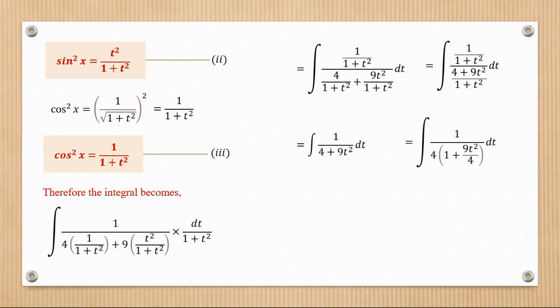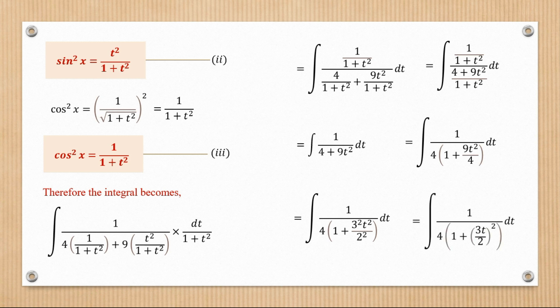This can be solved using trigonometric substitution. First, let's factorize out the 4, giving 1 over 4 into 1 plus 9t squared over 4. We note that 9 is 3 squared and 4 is 2 squared, so we can write this as the integral of 1 over 4 into 1 plus the bracket 3t over 2, squared.